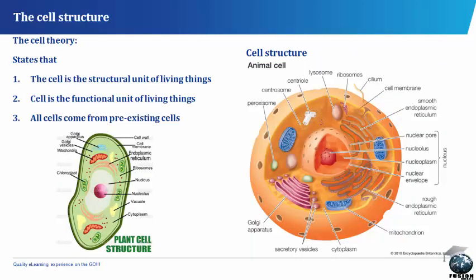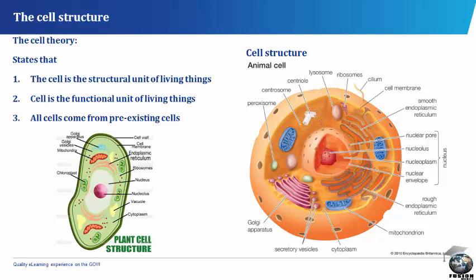The cell structure. The cell theory states that: 1. The cell is the structural unit of living things. 2. The cell is the functional unit of living things. 3. All cells come from pre-existing cells. 4. The plant cell structure and the animal cell structure differ in various ways.